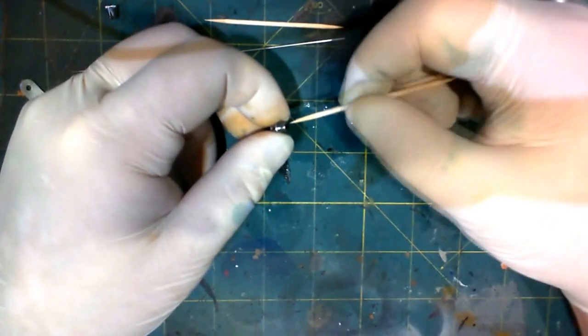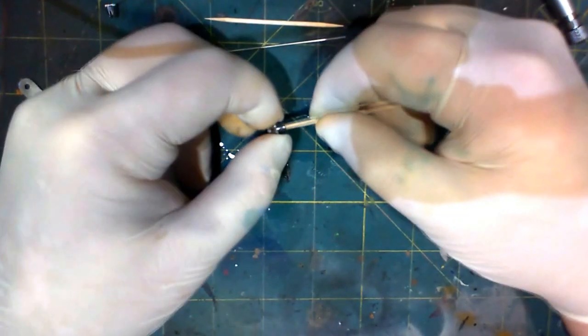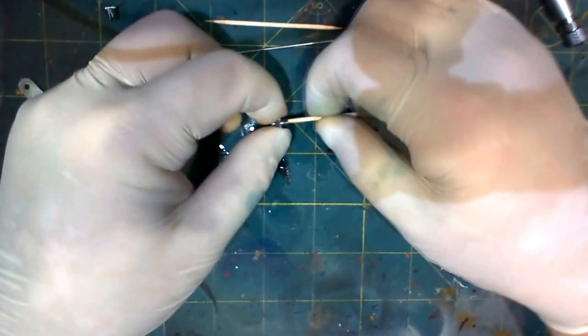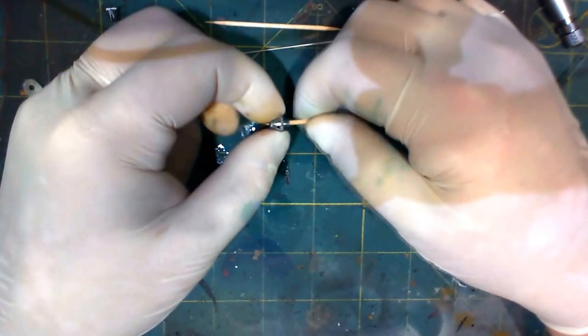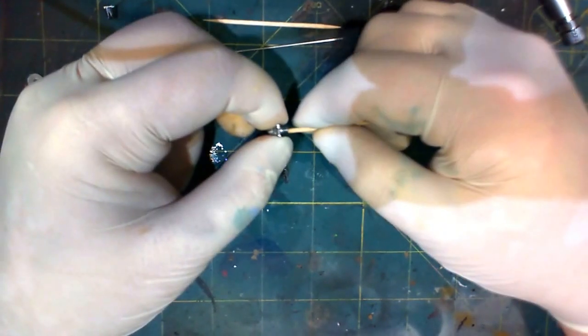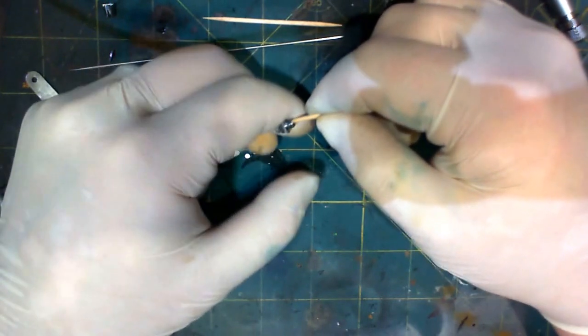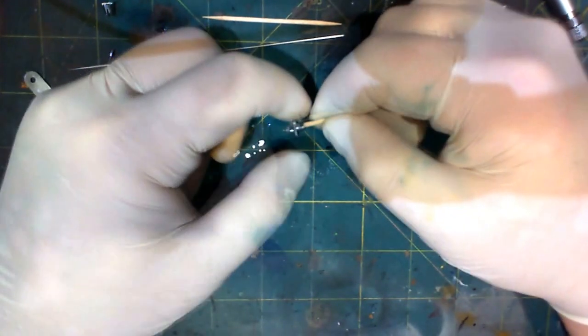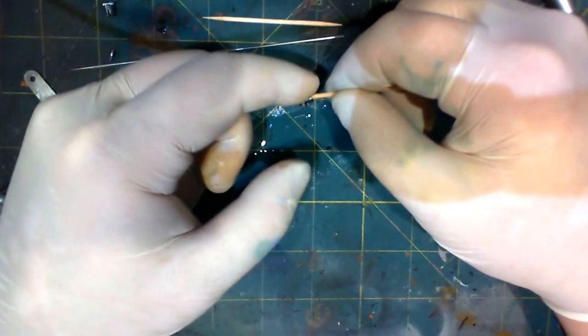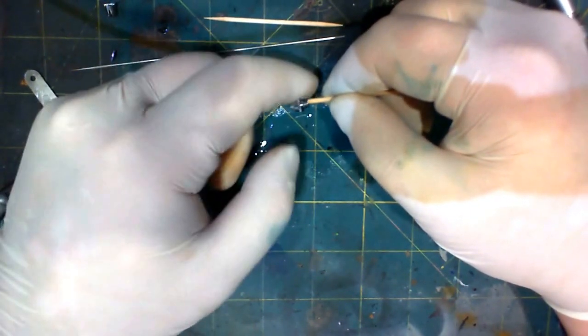And you can kind of see that it's picked up a little bit of paint. Really just make sure that the wood of the toothpick is rubbing against the entire inside of this piece.